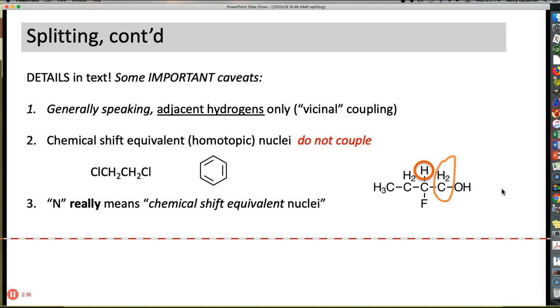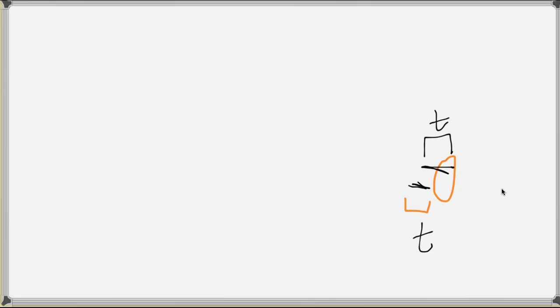That will split these two guys into a triplet, and this will split those guys into a triplet. So I don't have a pentet. I have N plus 1 here equals a triplet, and N plus 1 here equals a triplet. So what does it look like? Oh boy, well, here's what it looks like. It looks like this.